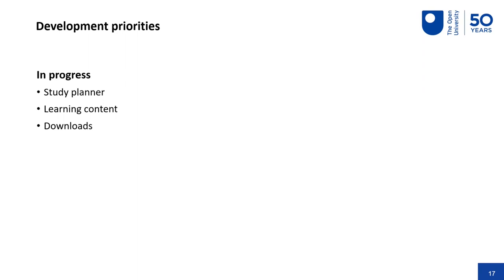From all the research we did and from user testing on the unbranded beta version, we've decided to focus on three things for our first launch: the study planner, getting all our learning content working really well in the app, and downloads. Our user testing found that download management was something users weren't quite comfortable with in the current app. However, the developers have been working really closely with Moodle to make changes — basically, students want Netflix-style download management, and if it's any more complicated than that, they don't know how to do it.